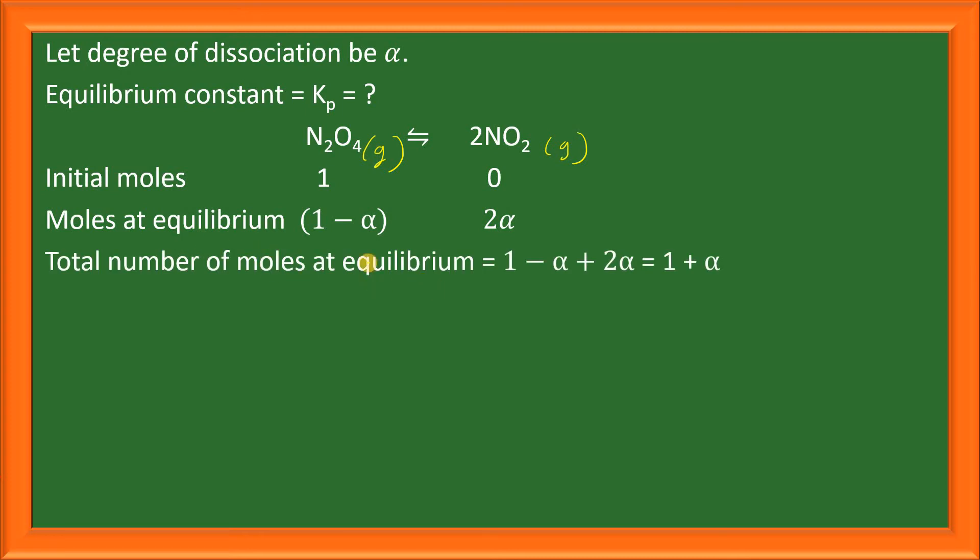Here 1 plus alpha will get cancelled and it will become 1 plus alpha. These are the total number of moles present at equilibrium.